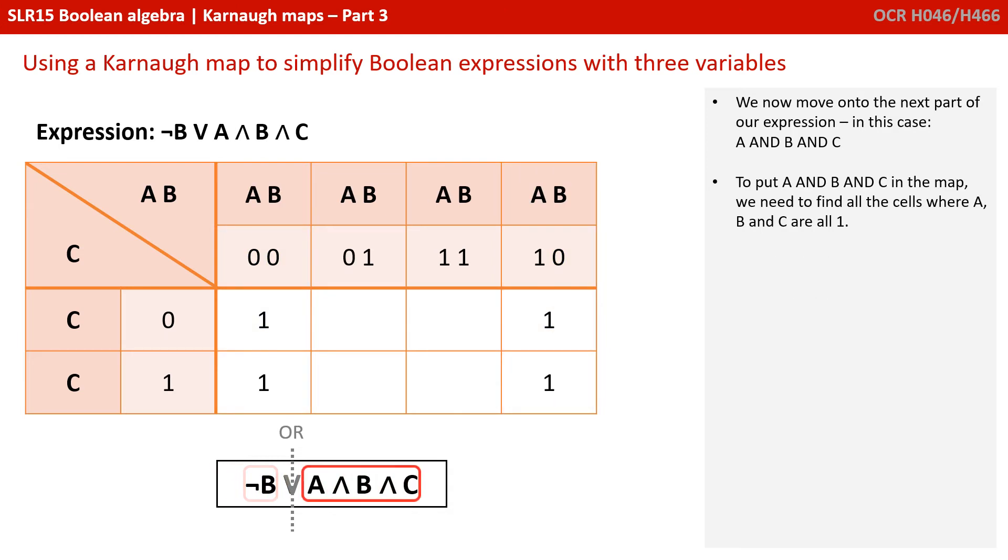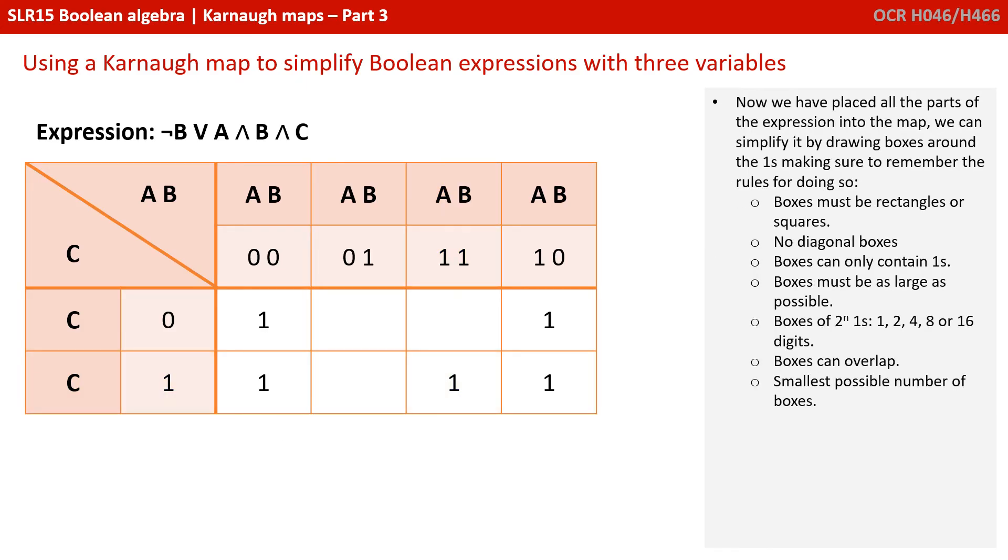We now move on to the next part of our expression. In this case, A AND B AND C. To put A AND B AND C in the map, we need to find all the cells where A, B and C are all one. There's only one cell where this is the case. So, we pop a one there. Now we've placed all the parts of the expression into the map, we can simplify it by drawing boxes around the ones, making sure to remember the rules for doing so that we covered earlier.